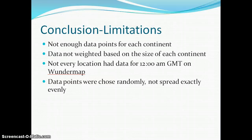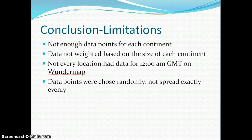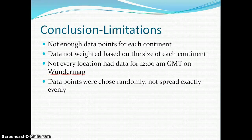Some of the limitations we came across were that we probably didn't take enough data points for each continent — we had five data points per continent, with the exception of Australia where we had three, which is basically five cities to represent the whole continent. Another limitation was that the data was not weighted based on the size of the continent. We also found that some data points were not calculated at exactly 12 a.m. GMT on the Wonder Map — some were maybe an hour off. Additionally, we chose data points at random and they weren't evenly spread out, though we tried to get them as spread out as possible.